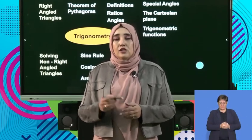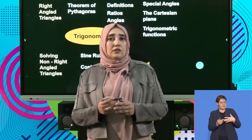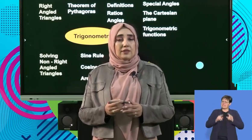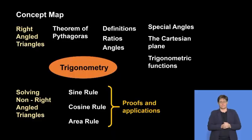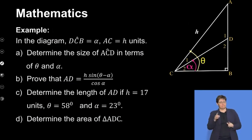Hi, welcome back. Before the break we were dealing with trigonometry rules and some exam type questions. Let's carry on with it. This example says in the diagram, DCB equals alpha, AC equals h units. They want us to find the size of ACD in terms of theta and alpha, and then there are a few other questions.